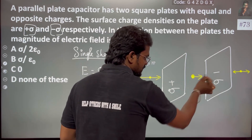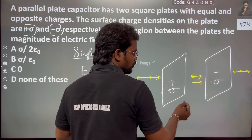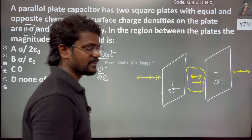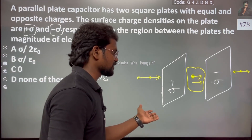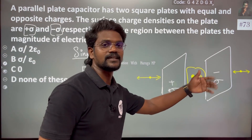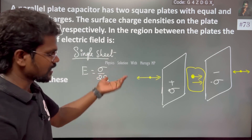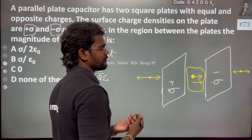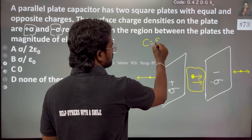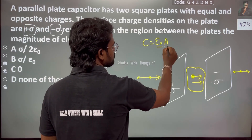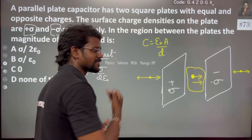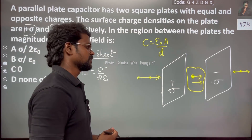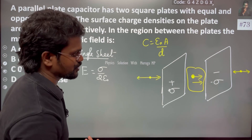Positive and negative will attract, so in between the plates the electric field is getting added. From one plate the electric field is adding — this is the Gauss's law application. At the same time, we know that capacitance depends upon the area, the distance between the plates, and also the permittivity.